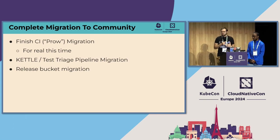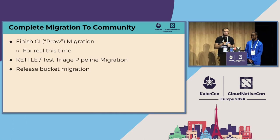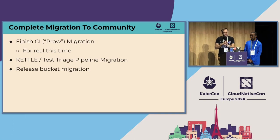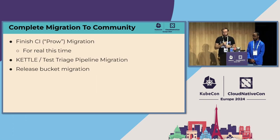We said we'd complete the migration in the community — that includes the CI. There's been a huge effort to move the CI but it's not quite all migrated yet. So for real this time, we're going to finish this year. We're going to move the test triage pipeline that goes with CI, because those are coupled, and the release bucket.